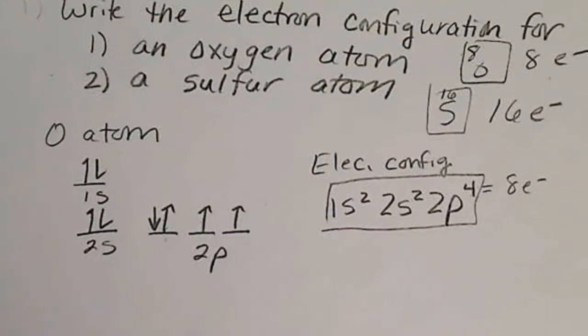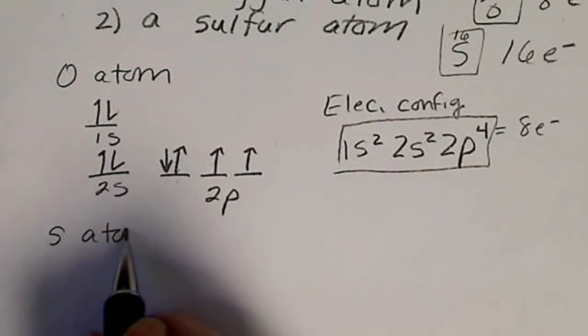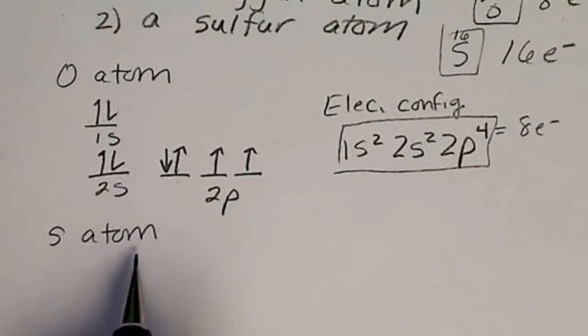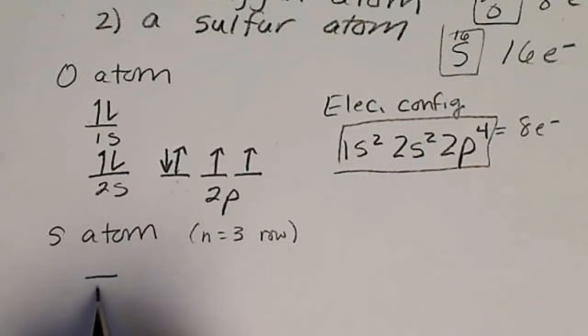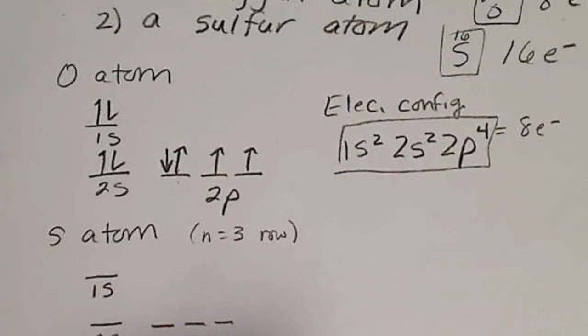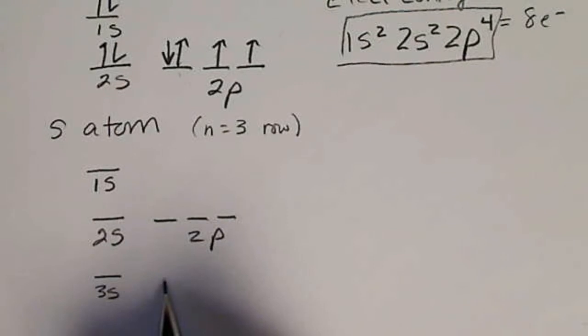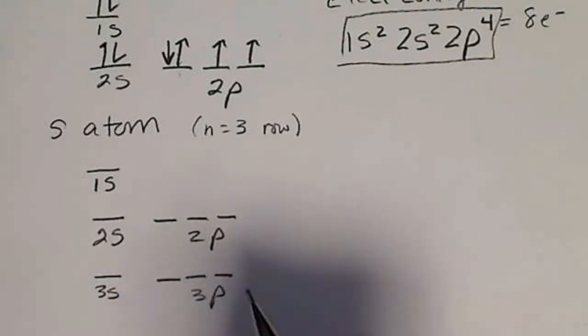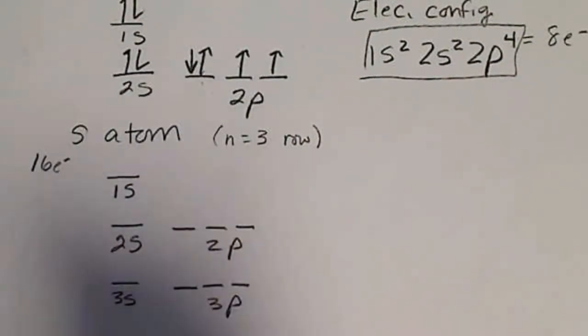We'll do the same thing now for sulfur. Sulfur is on the third row of the periodic table (n equals 3). When doing the orbital diagram, we'll have to go down to n equals 3: 1s, 2s, 2p, then 3s and 3p.